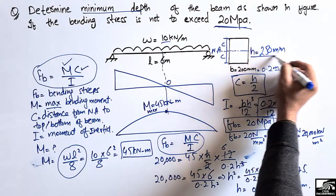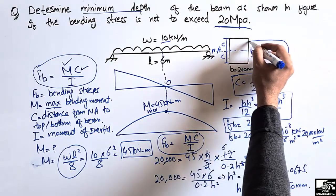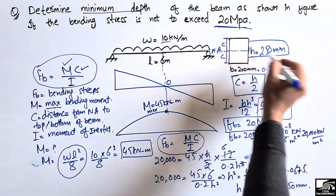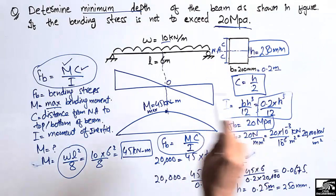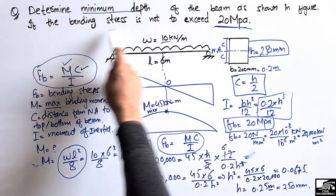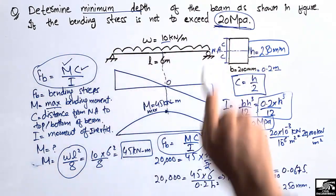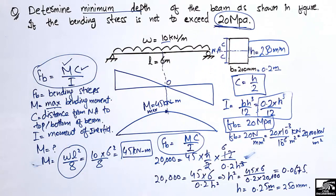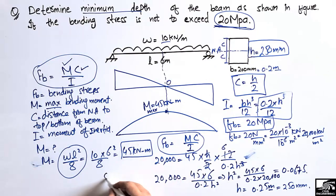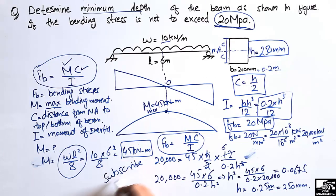So the minimum depth of the beam required in order to keep bending stresses not exceeding 20 megapascals is 250 millimeters. Hope you guys understand, and don't forget to subscribe to our channel for daily civil engineering videos. Thank you for watching.